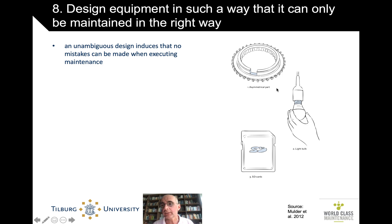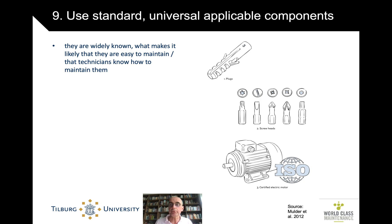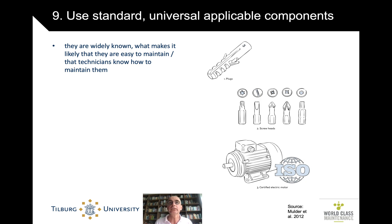Some asymmetry in design is often very convenient — even in IKEA furniture, you know which way something goes because the other way just doesn't fit. Sooner or later you will put it in the wrong way if it can go in two ways, so an unambiguous design helps. Use standard components — not just because they're cheaper, but because everybody knows them, knows how to work them, and has the tools available, like common screw heads or certified standard electric motors. Commonality of components is good for maintenance as well as cost.